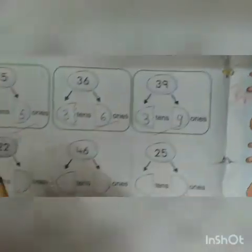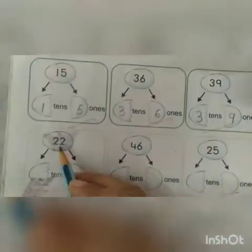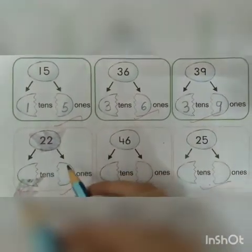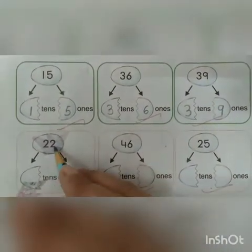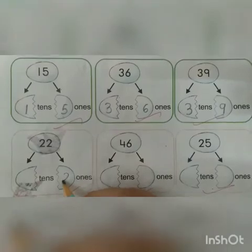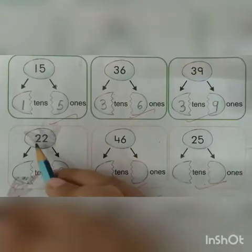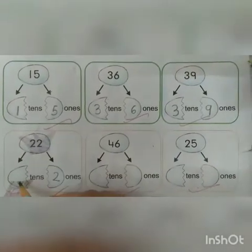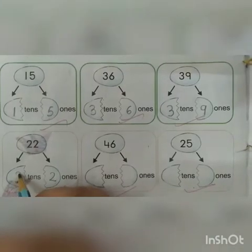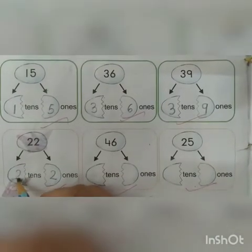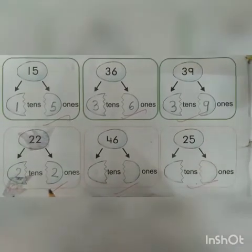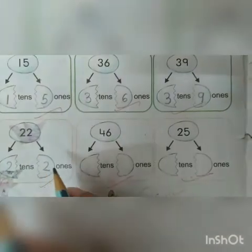Come to the next. Which number is this? 22. How many 1s are here? 2. We will write 2 here. How many 10s are here? 2. We will write 2 here. 2 tens, 2 ones. 22.